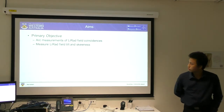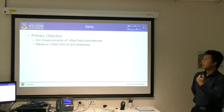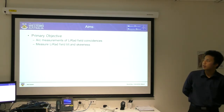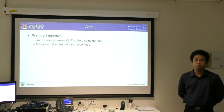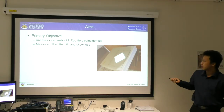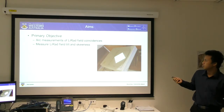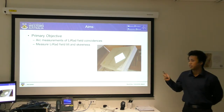The aims of my project: the primary objective is to conduct the light radiation field coincidence in arcs and measure the tilt and skewness of this light radiation field. This is a representation of the light field — the bumps on the side are just from the collimators. The secondary objective is transcribing the code from MATLAB to Python.